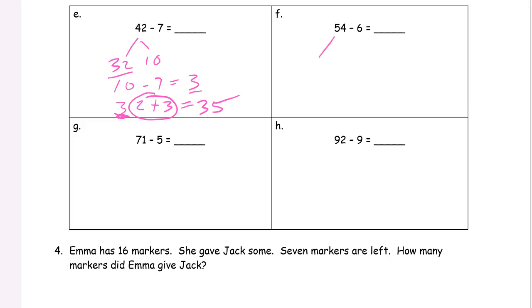So 54. I have 10 and 44. 10 minus 6 is 4. Take that 4 and add the 44. 48.